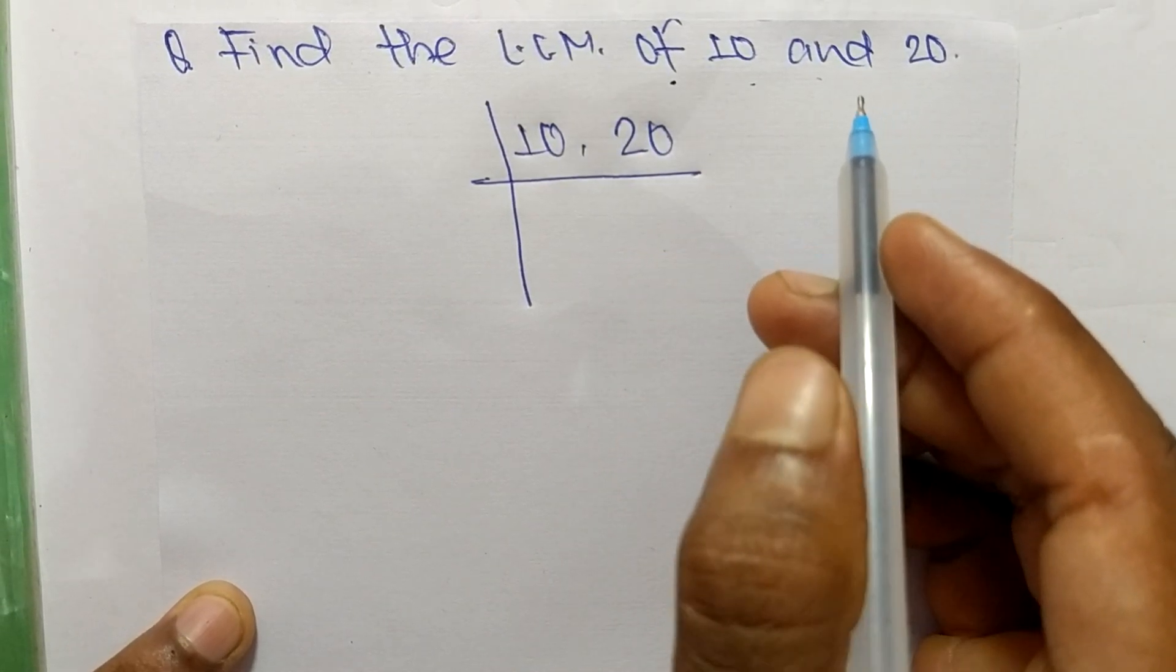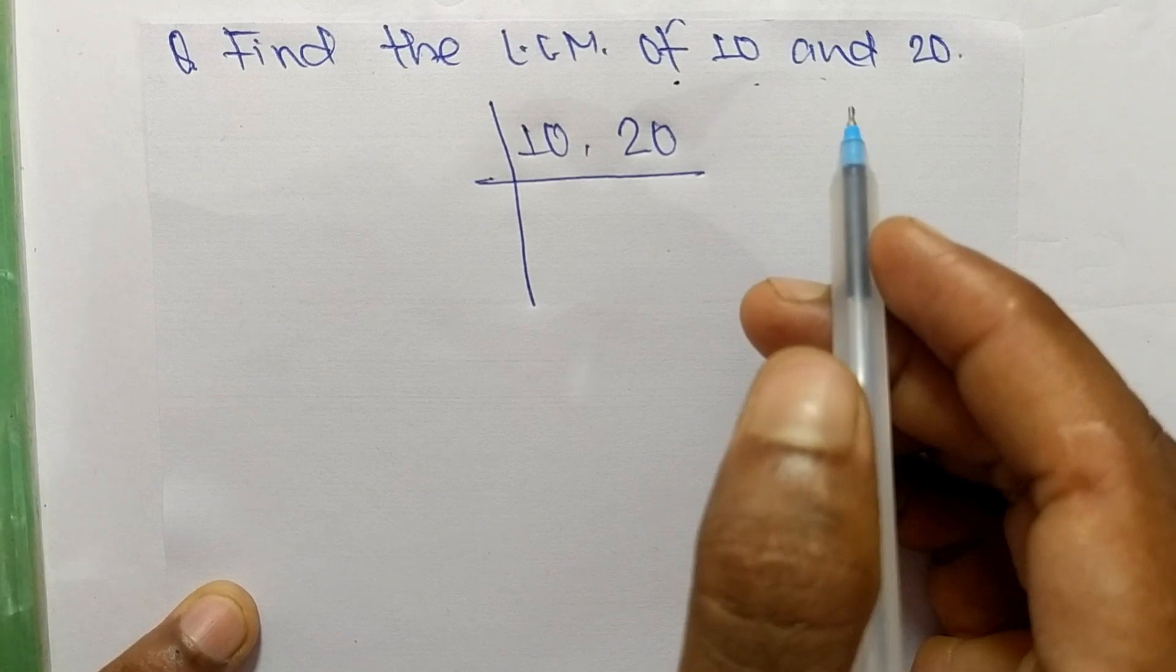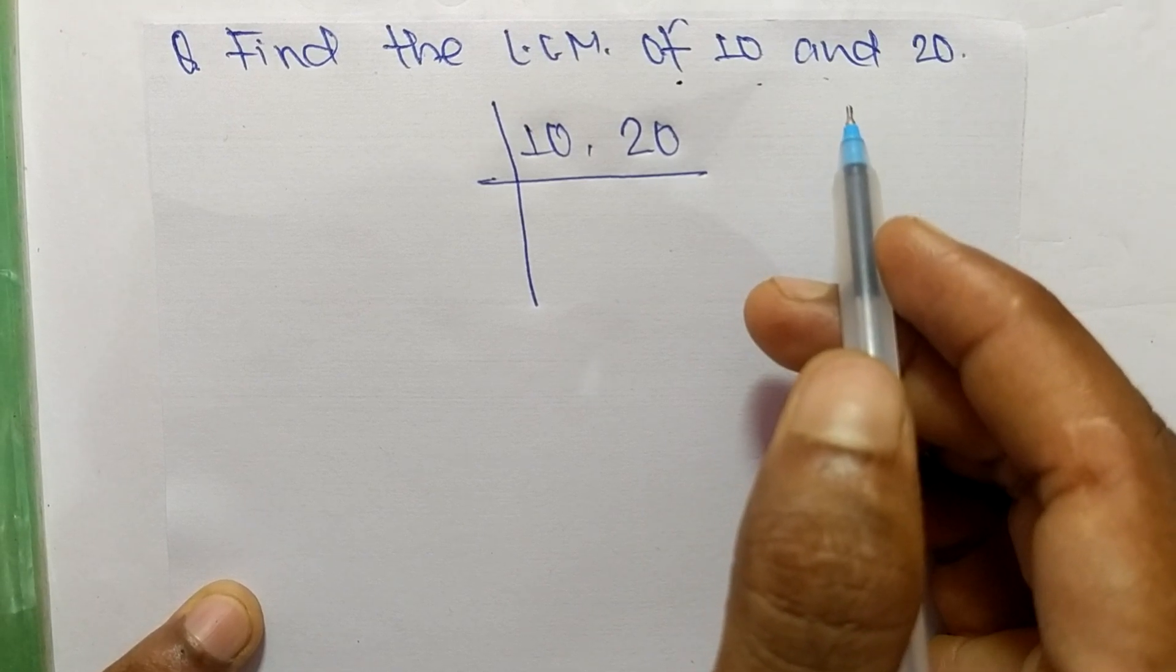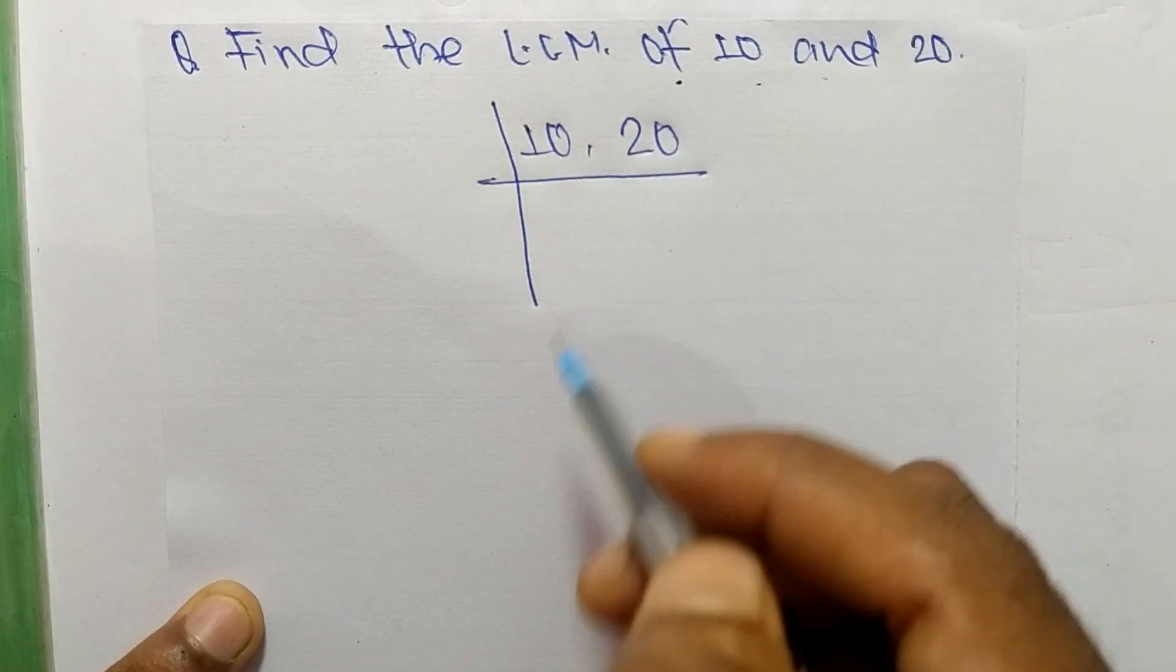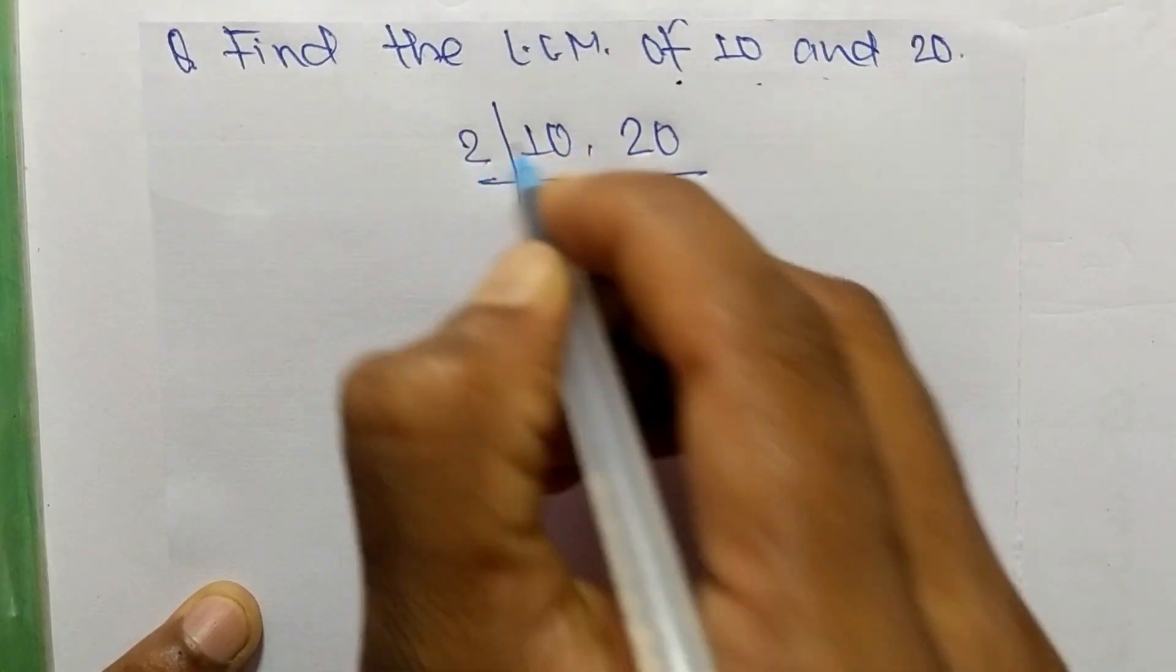To find LCM, first we have to choose the lowest number which can exactly divide 10 and 20. So the number is 2.